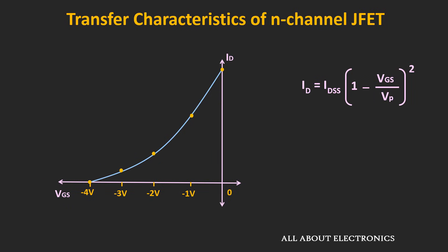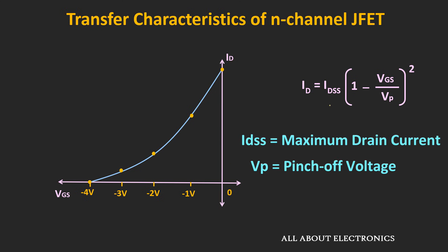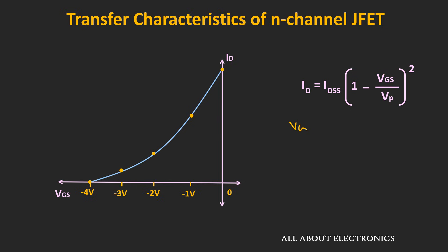Mathematically, the relationship can be expressed by this expression. That is, drain current Id is equal to Idss times (1 - Vgs divided by Vp) whole square. Where Idss is the maximum value of the drain current and Vp is the pinch-off voltage of this JFET. So in this expression, if we put Vgs is equal to 0, then we will get this drain current Id is equal to Idss. So whenever Vgs is equal to 0, the value of drain current is maximum, and the value of that drain current will be equal to Idss. Similarly, whenever we put Vgs is equal to Vp, at that time this drain current Id will be equal to 0. So whenever Vgs is equal to Vp, the drain current is 0. So by putting these two values, we will get two extreme points of this curve.